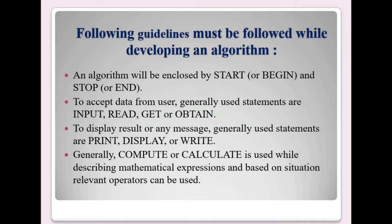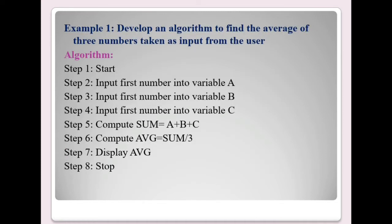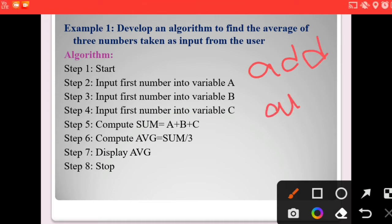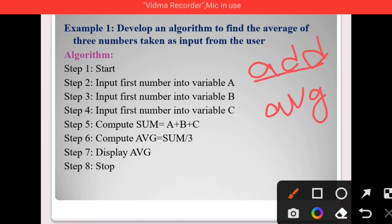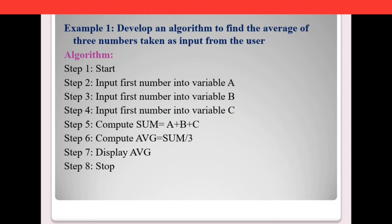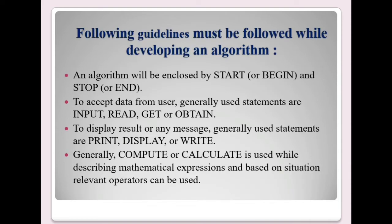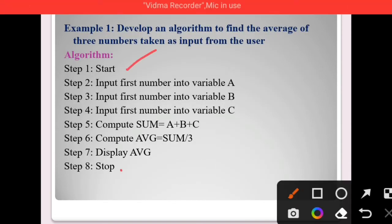Let's see some algorithm examples. The first example is: develop an algorithm to find the average of three numbers taken as input from the user. Here, you need to perform the average of three numbers — first you perform addition, then you calculate the average. The three numbers are taken as input from the user. The algorithm should start with 'start' and end with 'stop'.